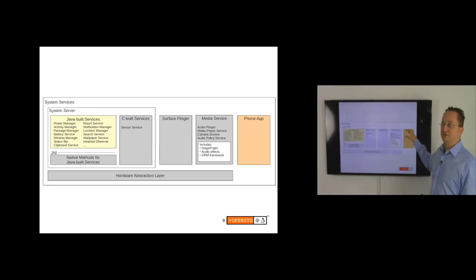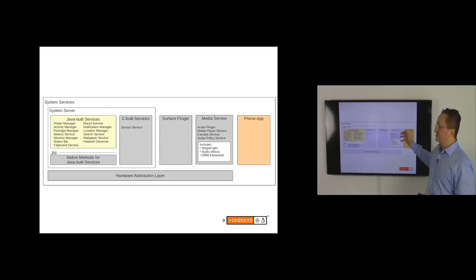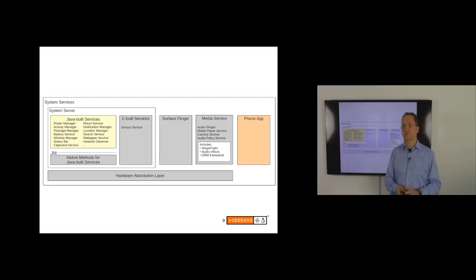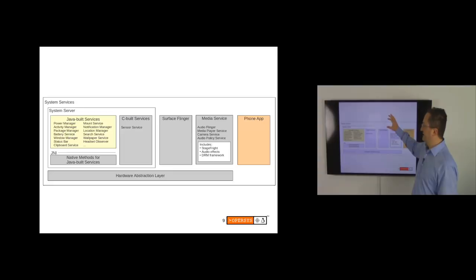One reason for cutting system services into separate processes has to do with reliability and responsiveness. SurfaceFlinger and MediaService are independent. When I present this, I ask people why the Google team decided to create some system services in C and some in Java — the answer is performance. We want some system services that are not dependent on Java's garbage collection kicking in, so humans interacting with the device don't perceive any lag. That's an architectural decision made very early on.